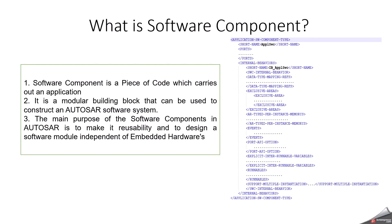What is a software component? A software component is a piece of code which carries out an application. To configure a software component, you need ports and internal behavior. Internal behavior contains data-rate mapping reference, exclusive area, air type, per-instance memory, events, port API options, inter-runnable variables, and runnables. It is a modular building block used to construct an AUTOSAR software system. The main purpose of software components in AUTOSAR is reusability and to design software modules independent of embedded hardware.